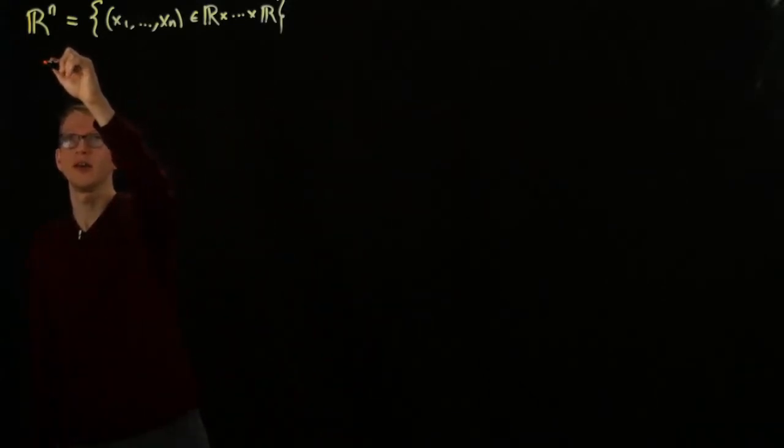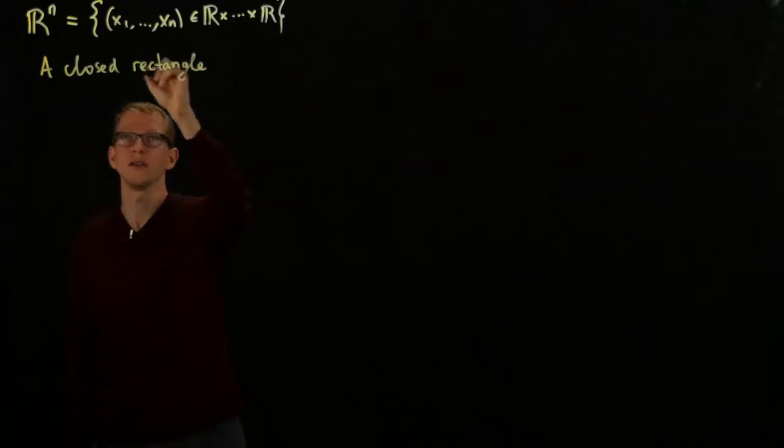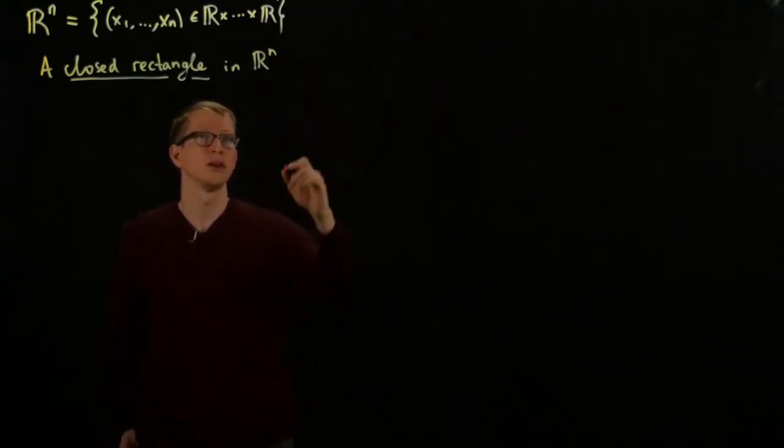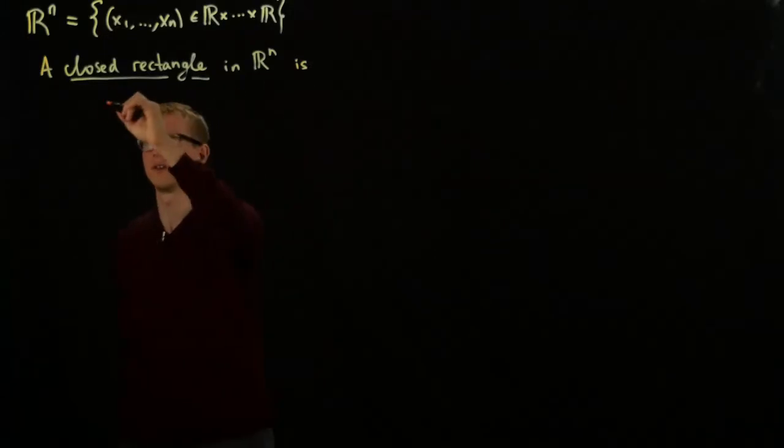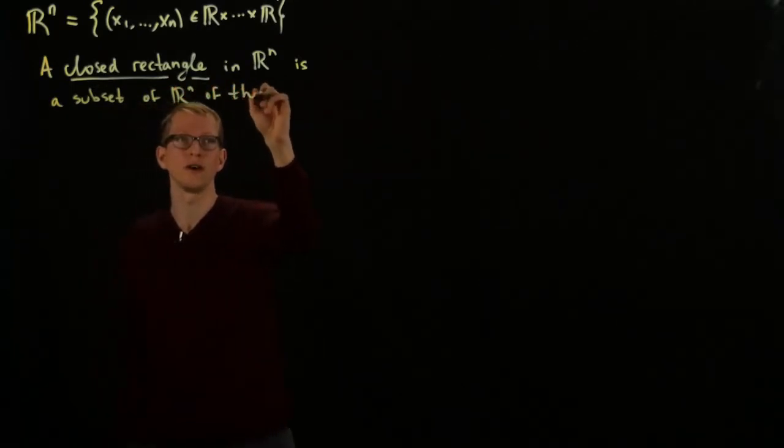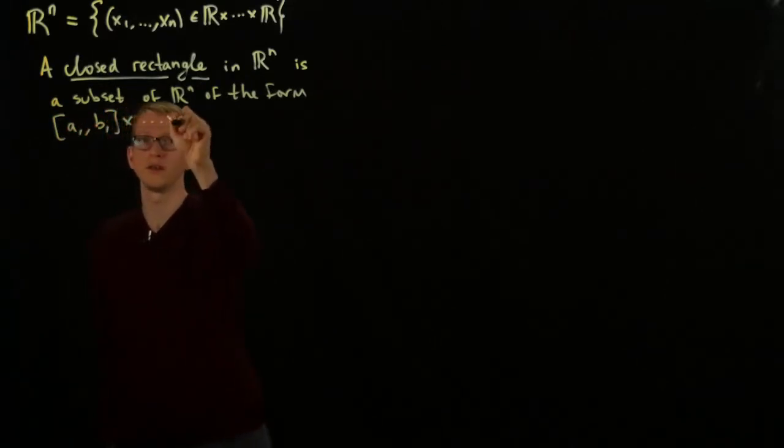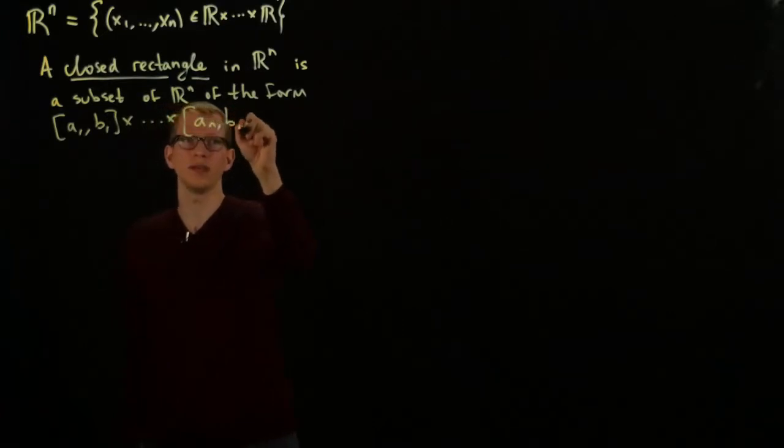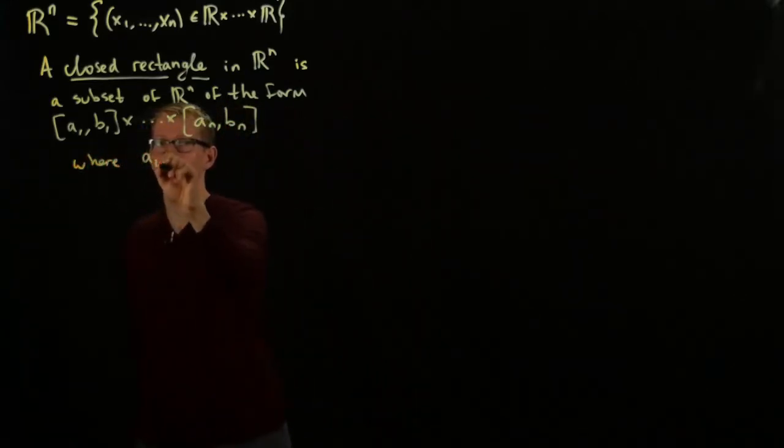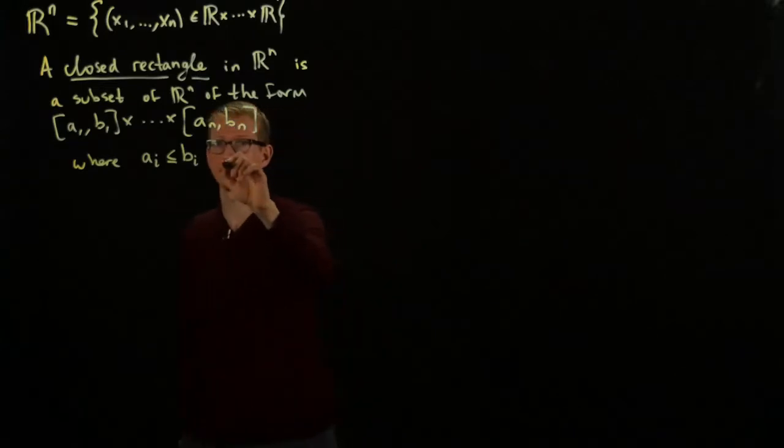So the first thing we want to define is a closed rectangle in R^n is a very particular subset, and it's a subset of R^n of the form [a1,b1] cross ... [aN,bN], where ai is less than or equal to bi, and these are both real numbers. And this is true for all i.